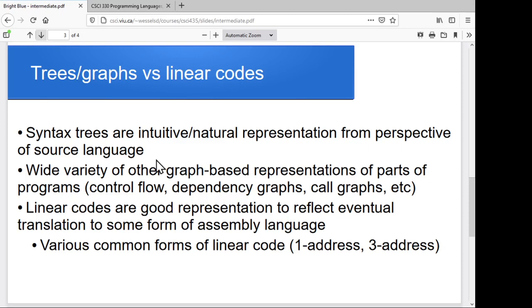The syntax trees are nice and intuitive, a natural representation in terms of what the original source code looked like. The linear codes are a good representation to target an eventual assembly language. With the syntax trees, there's actually a whole variety of other graphical representations that we can look at. We'll also look at graphical representations for representing the flow of control within a program—when you jump backward and forward across instructions because of an if or because of a loop or because of a function call.